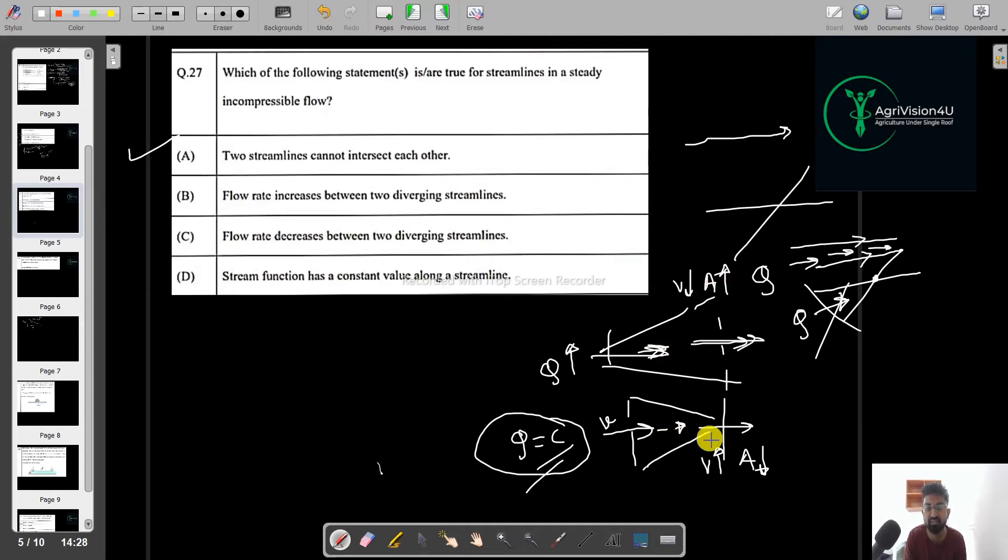So that means our Q should be constant throughout. In this case also, in this case also. So that means this statement is wrong. So now if I talk about the C flow rate decreases between the two diverging streamlines. So again the same, it is also wrong whether it is converging or diverging flow will remain constant. Q equals area into volume. So that should remain constant.